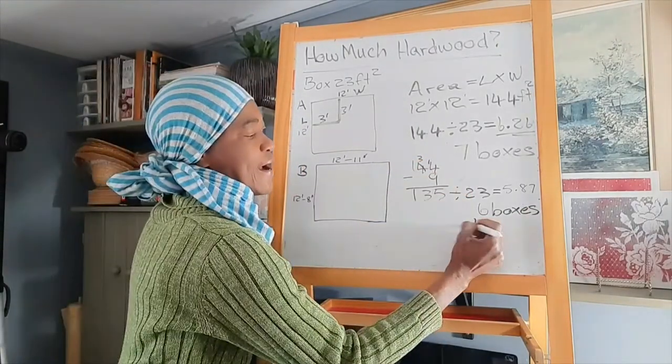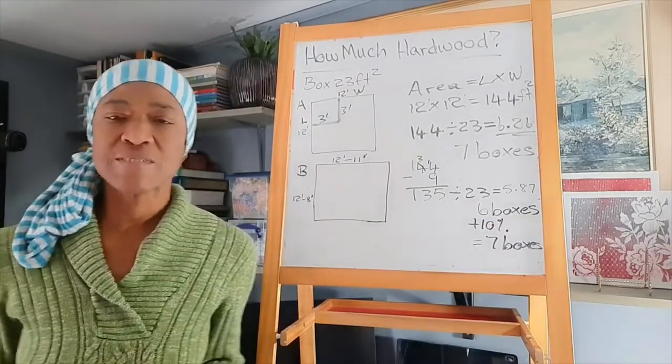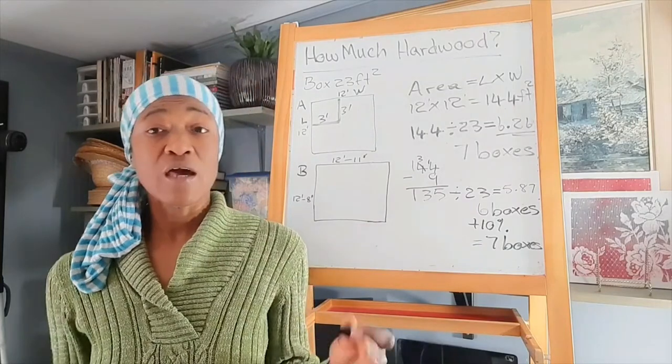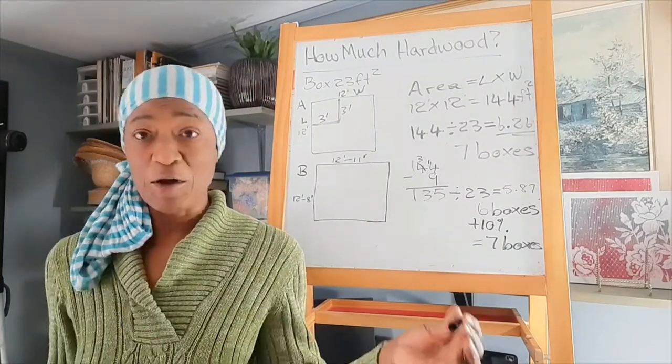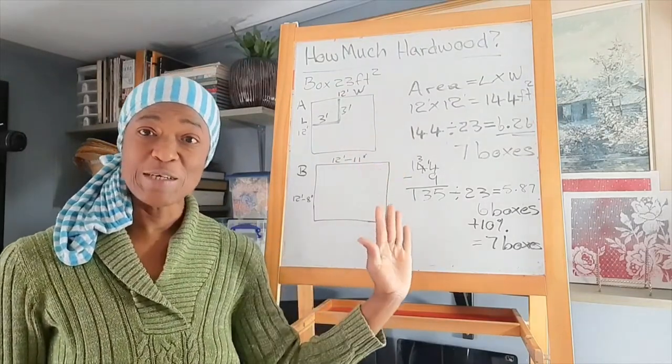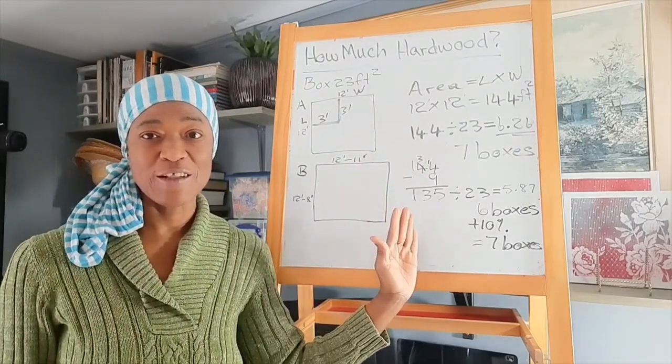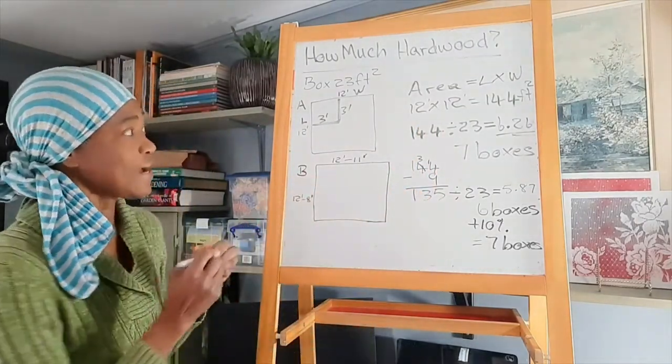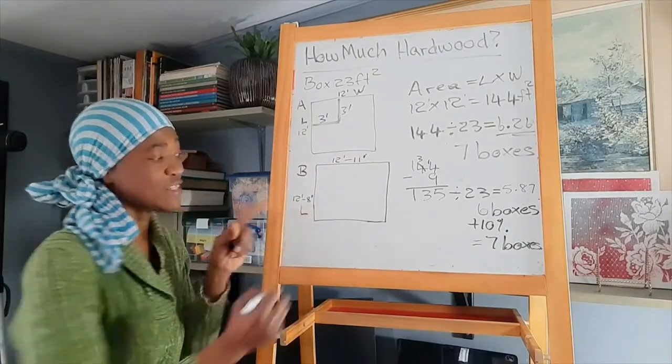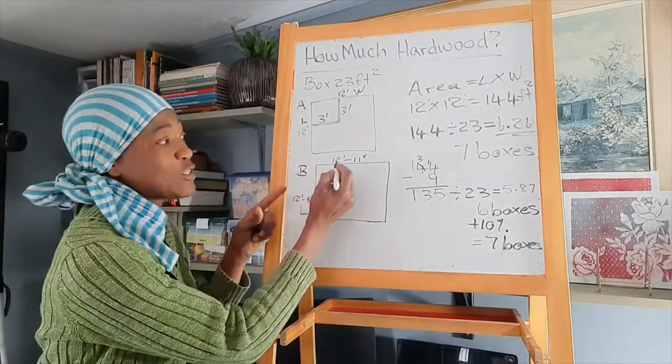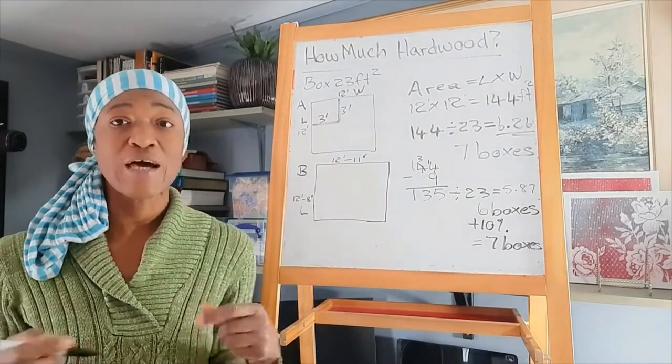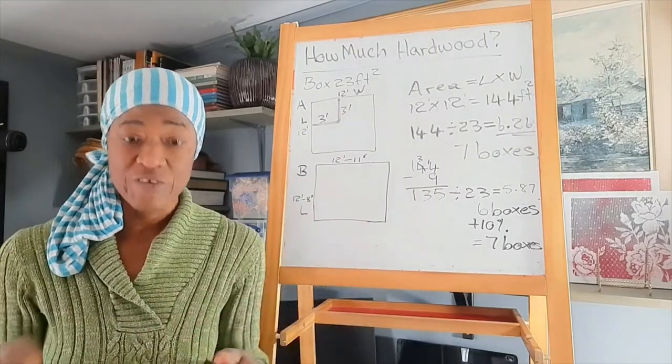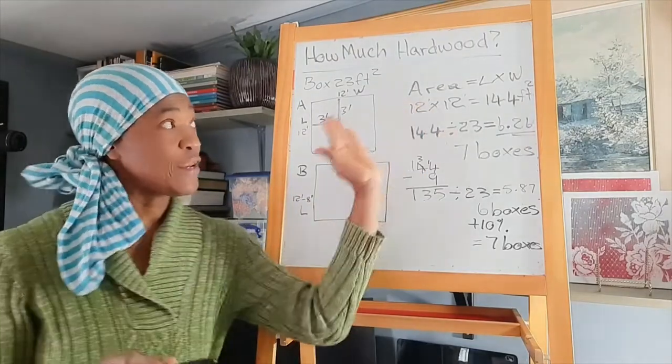And then you could go ahead and add your 10%. The 10% usually is just in case there are any unforeseen circumstances that happen along the way. I hope I did justice to showing you how to do your calculations here. I'll have to erase what's here so I can go on to a room that has a length that's 12 feet, 8 inches by 12 feet, 11 inches. I want to show you how to calculate when you have inches and not just feet.